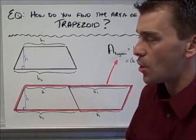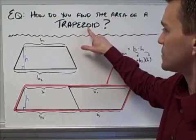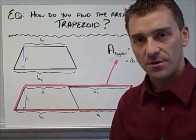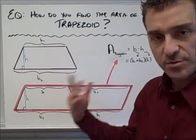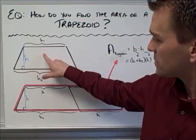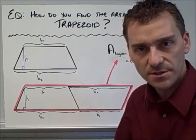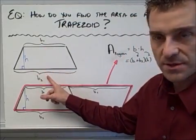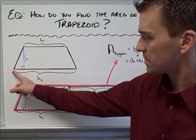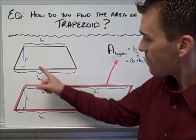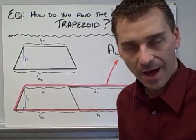The essential question for this video is: how do you find the area of a trapezoid? Here is a simple trapezoid, labeled with its parts. The two sides that are parallel are the bases — I've labeled them B1 and B2 for the length of each base. The height is drawn from the top down, making a right angle, giving us the height of that trapezoid.